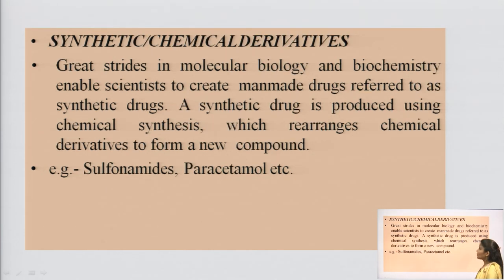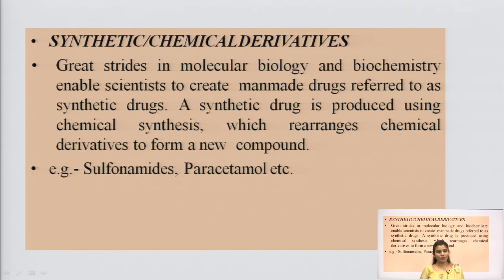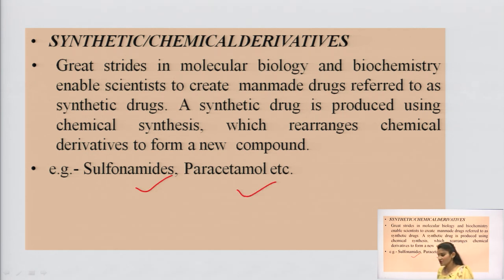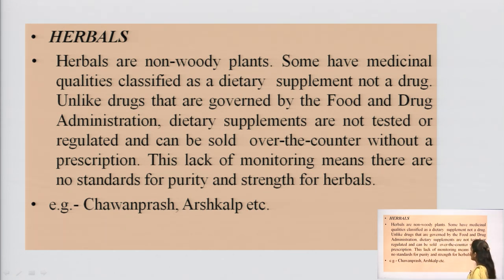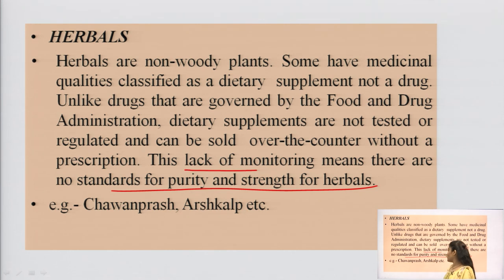The next source is the synthetic source. We have two types: synthetic and semi-synthetic. Semi-synthetic means taking a natural source and modifying its chemical structure — the drug derived from such modification is called a semi-synthetic drug. Examples of drugs from synthetic sources include sulfonamides and paracetamol. The last source is herbal — non-woody plants with medicinal qualities classified as dietary supplements, not drugs. Standards for purity and strength of herbals are lacking. Examples include Chyawanprash and Arshakalpa. These are the examples of herbal sources of drugs.